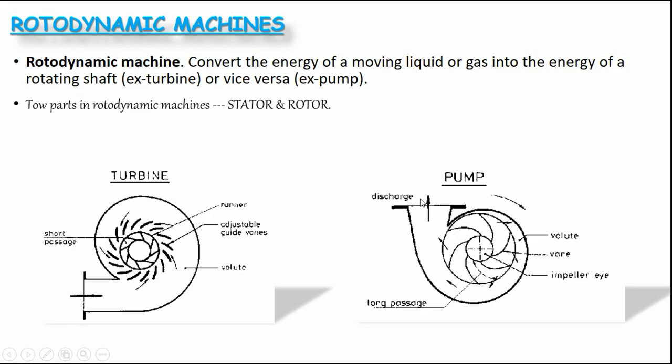As we know, the rotodynamic machine has two parts: stator and rotor. Stator means that it doesn't move.